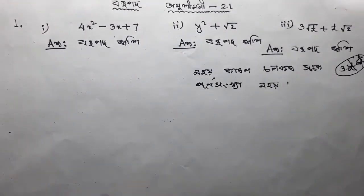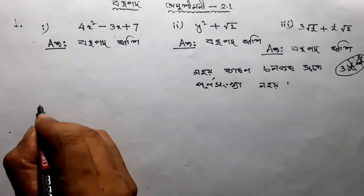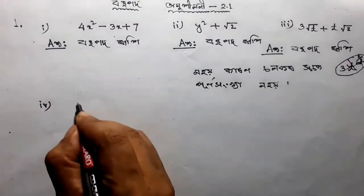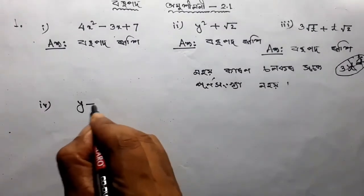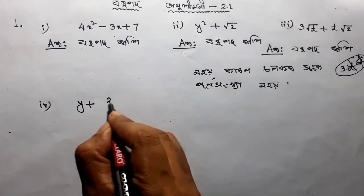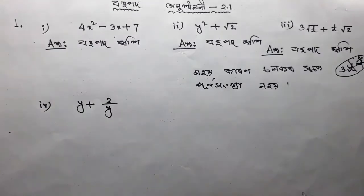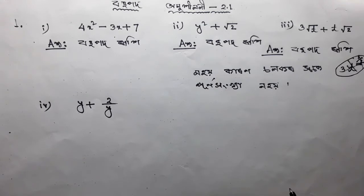Number 4, 2y plus 2 by y. This is not true, because this is not true.